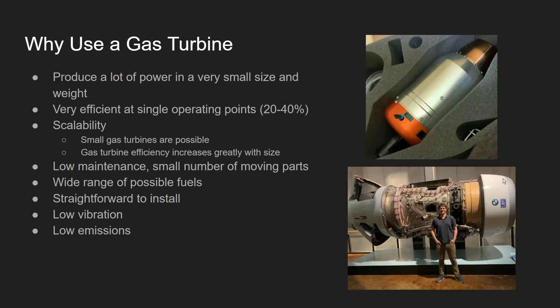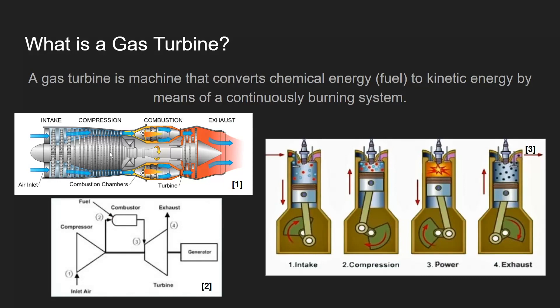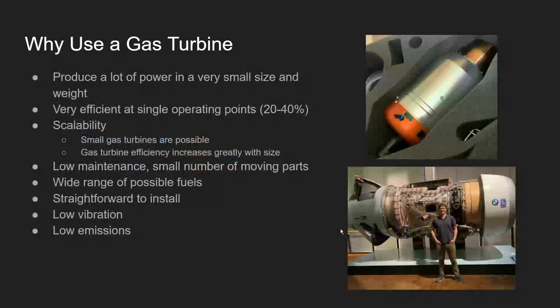Gas turbines are also very low maintenance because they have a small number of moving parts. The main moving part is a shaft assembly made up of the shaft, compressors, and turbines — although multiple parts, it moves as one fairly rigid body. In contrast, an internal combustion engine has many kinds of motion: the piston head against the piston chamber, the connecting rod, crankshaft, and more — creating a lot of wear and tear and degradation. The gas turbine, with just one main moving part and a couple of bearings, is far less maintenance-intensive.